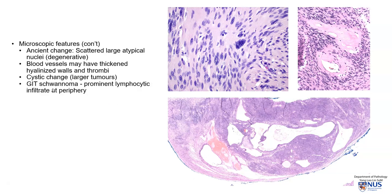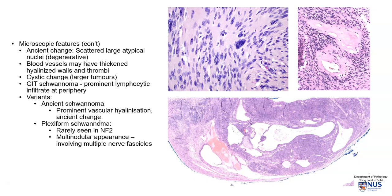Very interestingly, in the gastrointestinal tract, schwannomas occurring here tend to have a very prominent rim of lymphocytic cells at the periphery of the tumor. There are several variants, such as ancient schwannoma — where there is extremely prominent ancient change as well as vascular hyalinization — and the plexiform schwannoma, which is quite rare. It may be seen in neurofibromatosis type 2, and this tumor has a classical multinodular appearance rather than a single mass, because it involves multiple nerve fascicles.